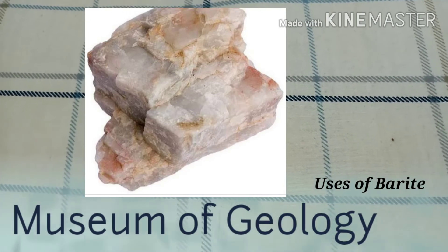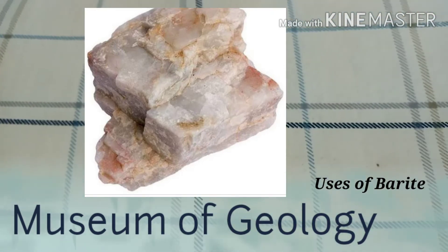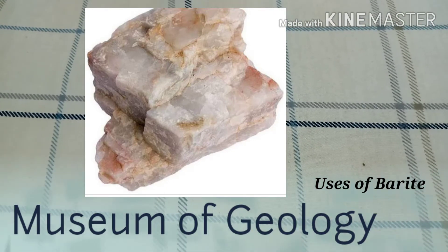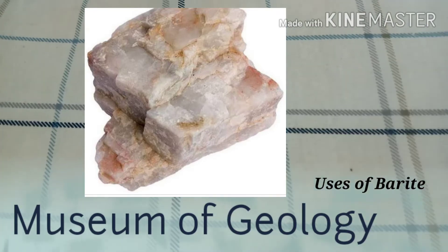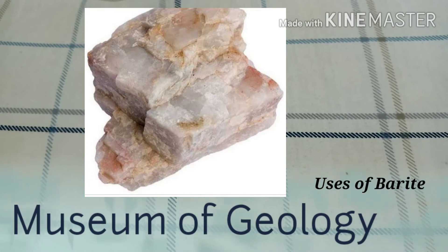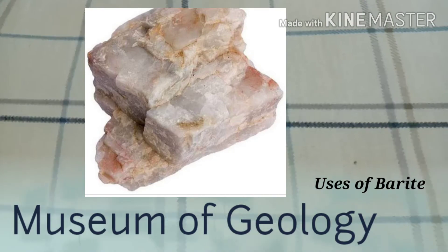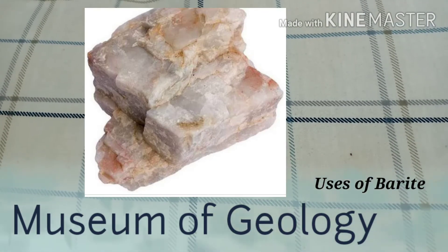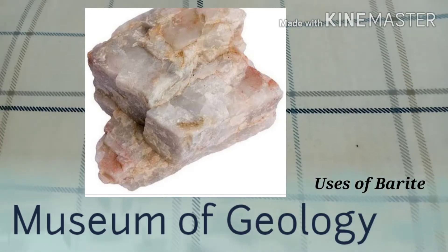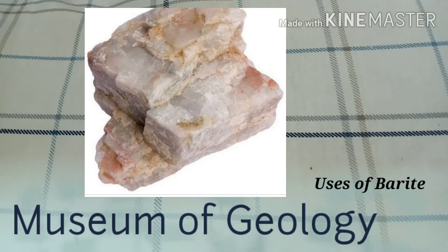Barite is the main ore of barium metal and is used as a paint and plastic filler. It is applied for sound reduction in various engine compartments. This mineral is also used in radiation shielding, cements, and glass ceramics. It is used for making a smooth and corrosion-resistant coat for trucks and automobiles.